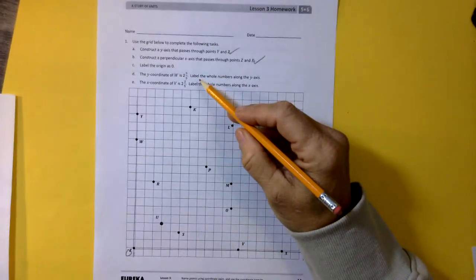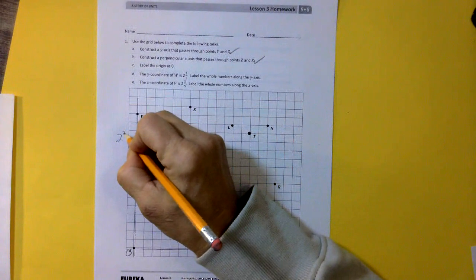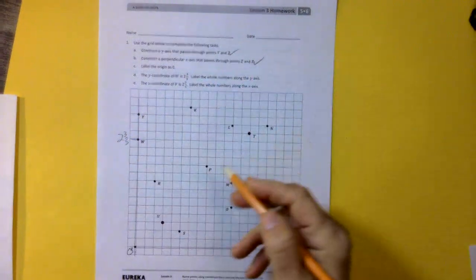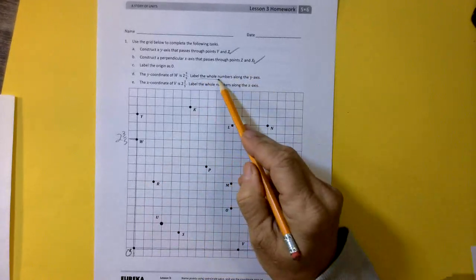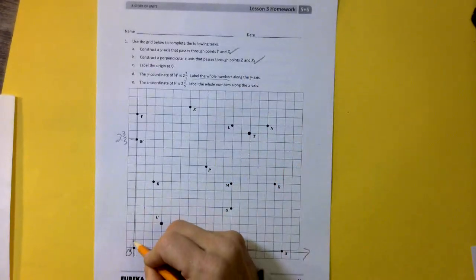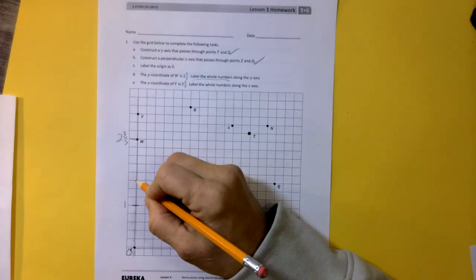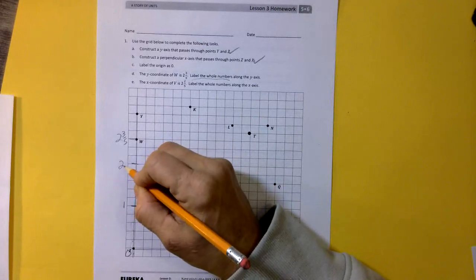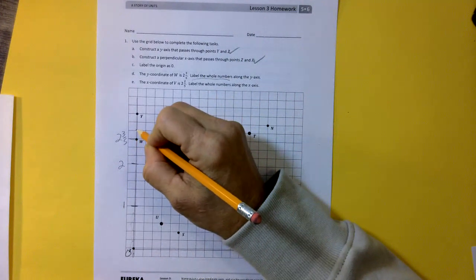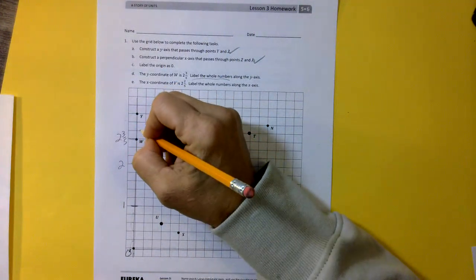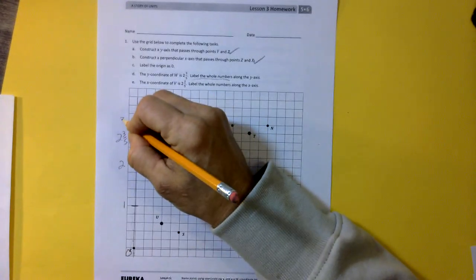The y-coordinate of w is 2 and 3 fifths. So we know this is 2 and 3 fifths. That means that we are counting in fifths. Each box is worth a fifth. It says label the whole numbers. So 1, 2, 3, 4, 5 would be 1. 1, 2, 3, 4, 5 more would be 2. 1, 2, 3. So we can tell we're on track. 2 and 3 fifths, 2 and 4 fifths, 2 and 5 fifths. So 1, 2, 3, 4, 5. And that's 3.